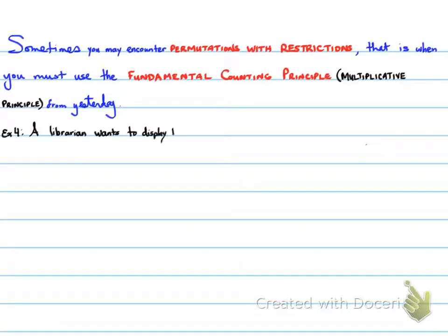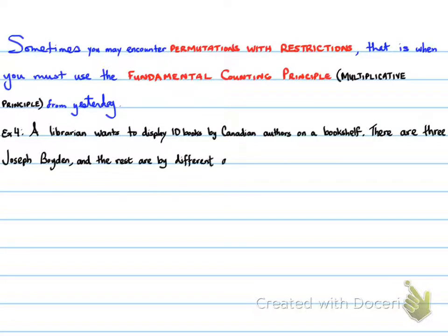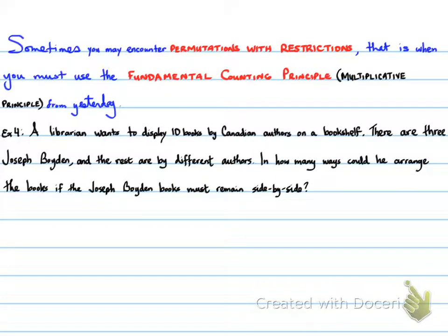A librarian wants to display 10 books by Canadian authors on a bookshelf. There are three Joseph Boyden books, and the rest are by different authors. In how many ways could he arrange the books if the Joseph Boyden books must remain side by side? Understanding this problem requires you to do a little bit of work.